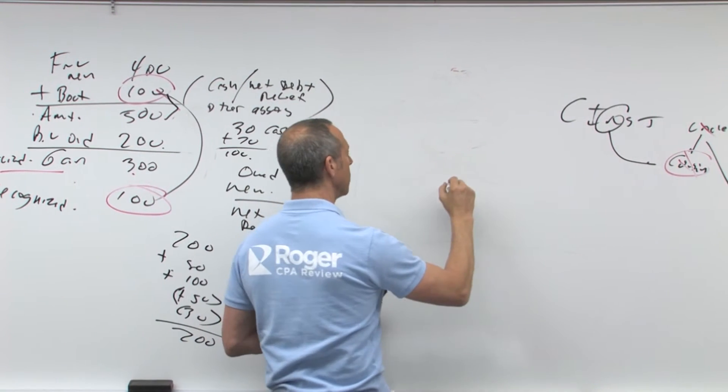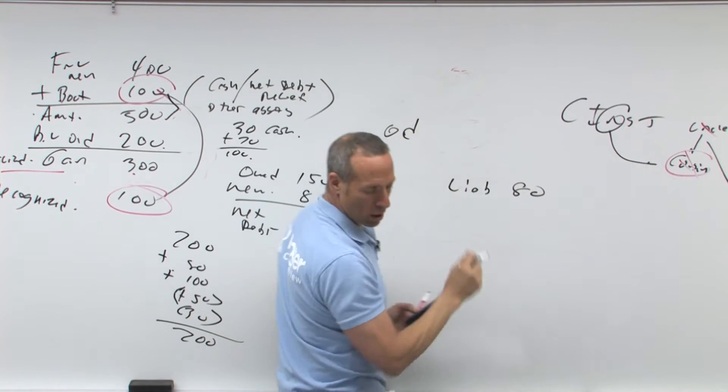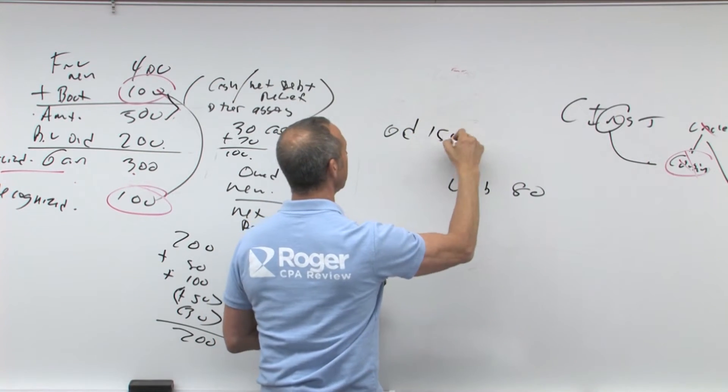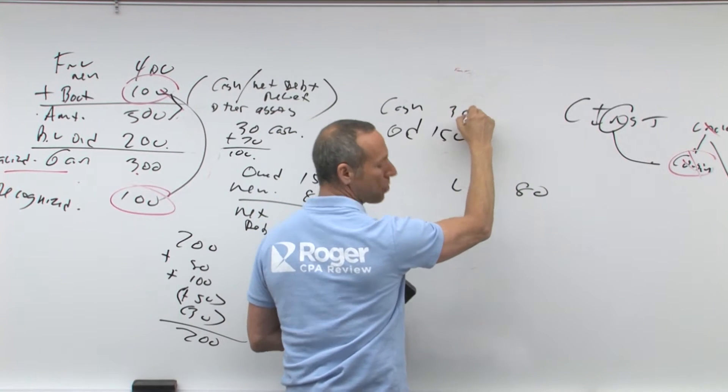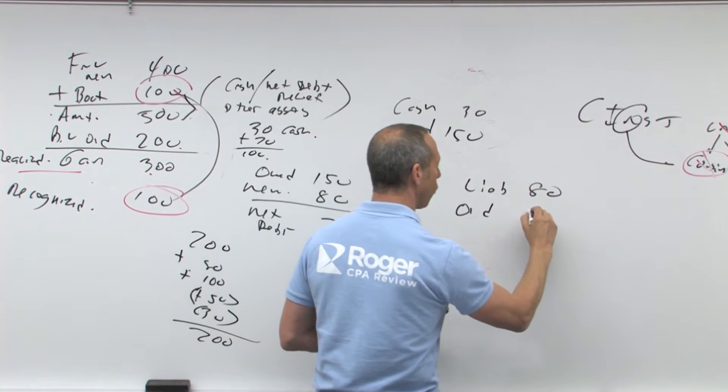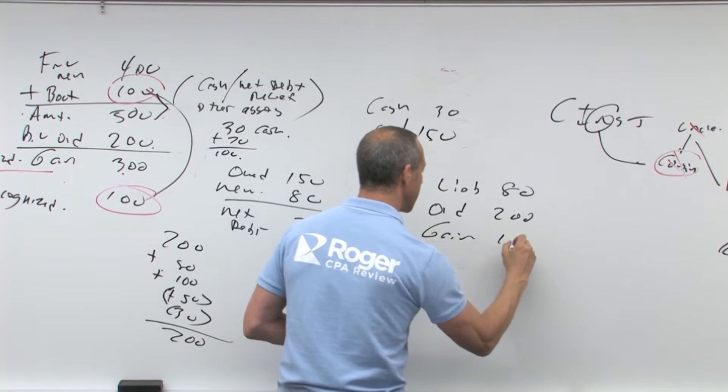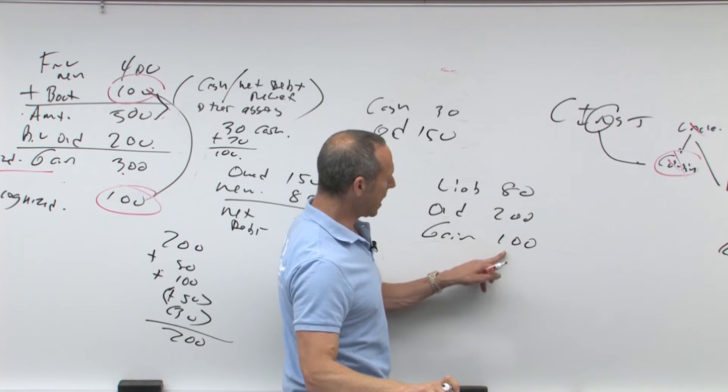Journal entry is the new liability is 80. Get rid of the old liability, which was 150. We received some cash of 30. We get rid of the old for 200, was the book value, carrying value. We just recognized a gain of 100, so we got a gain.